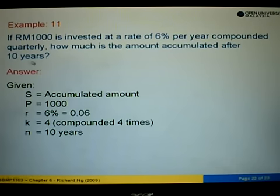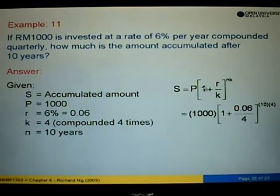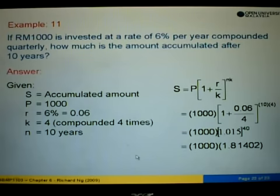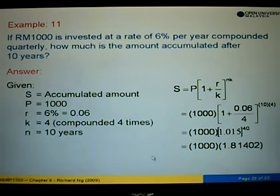n is the number of years, which is given as 10. Using the formula S equals P times (1 plus r over k) to the power nk, we substitute: P is 1000, r is 0.06, k is 4, and n is 10. So 0.06 divided by 4 gives 0.015, giving us 1.015 to the power 40. Using the calculator, 1.015 to the power 40 gives 1.8142, multiplied by 1000.